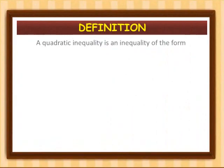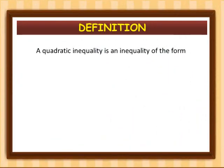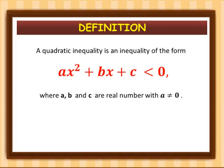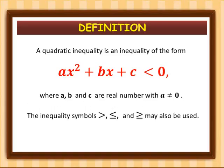A quadratic inequality is an inequality of the form ax² + bx + c < 0, where a, b, and c are real numbers with a not equal to 0. The inequality symbols greater than, less than, less than or equal to, and greater than or equal to may also be used.